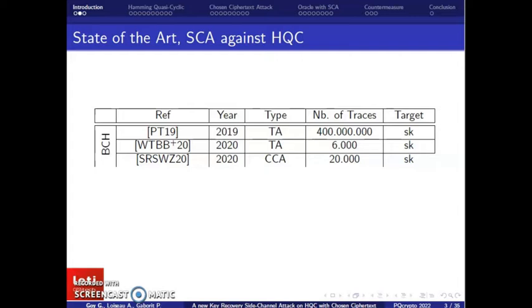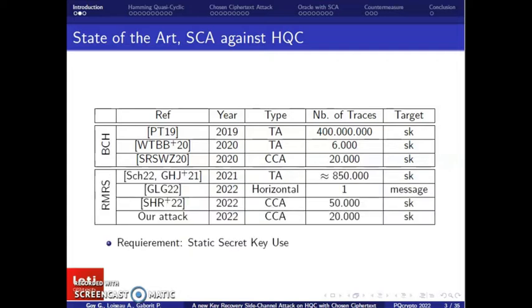Since 2020, authors of HQC changed the public error correction codes for the concatenated Reed-Muller and Reed-Solomon codes. Against this new version, a new timing attack used the rejection sampling to deduce information about the secret key. In 2022, a horizontal attack exploits a single HQC trace to recover the exchange message. This attack has a huge computational cost. In 2022, Chamberger et al. adapt their attack to the new RMRS version of HQC.